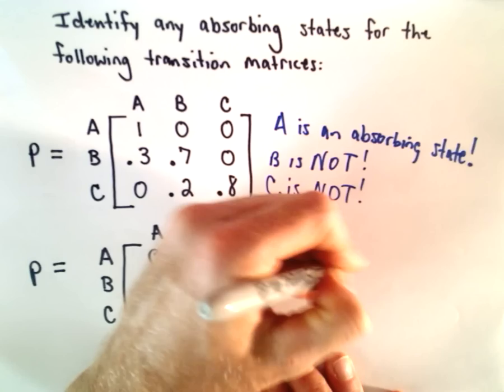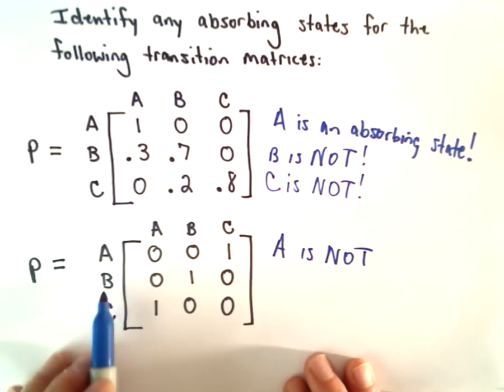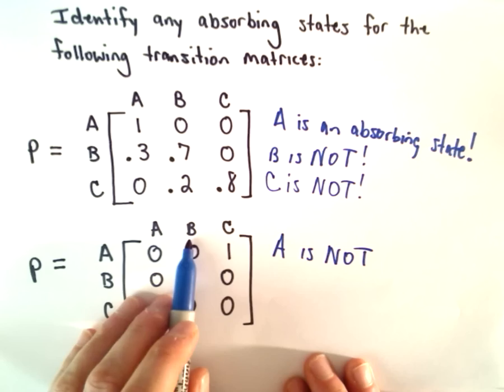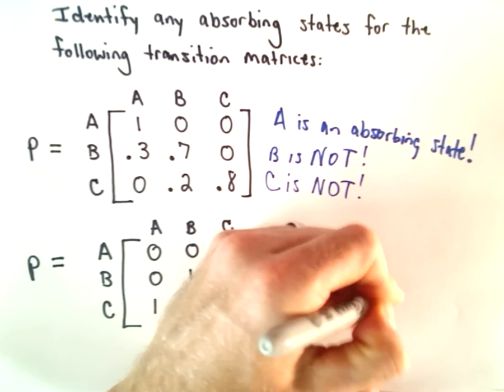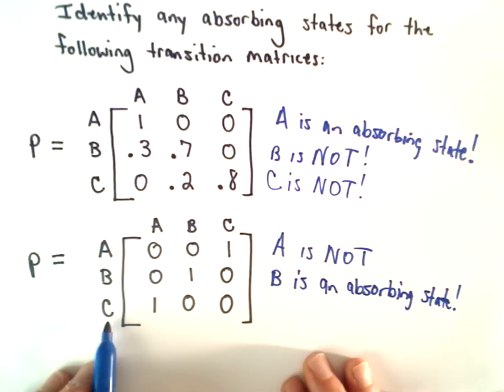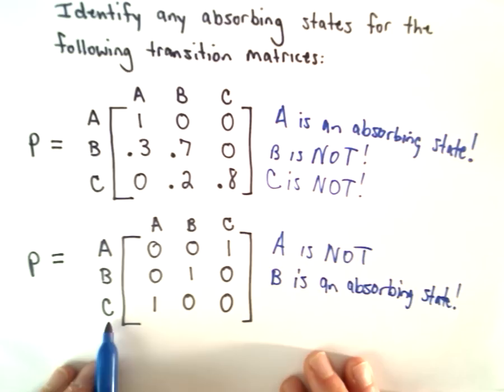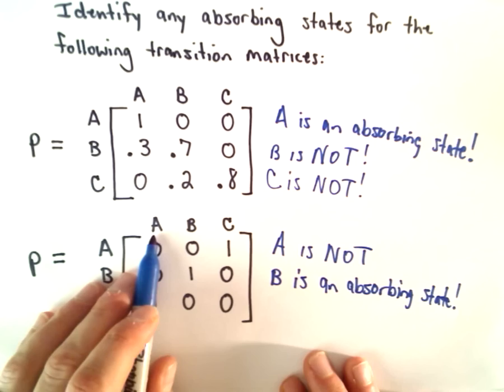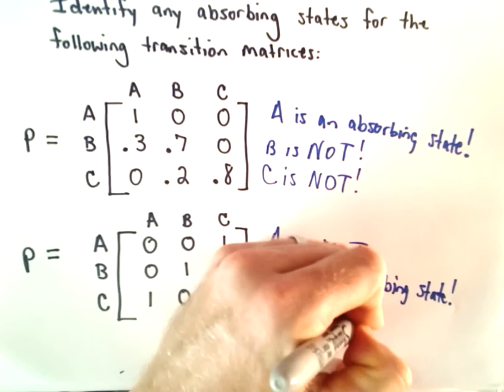If we look at state B, there's a 0% probability you'll go to A, but if you are in state B, there's a 100% probability that you'll stay in state B. Therefore, B is an absorbing state. Likewise, C is not going to be an absorbing state because if you're in C, there's a 100% probability that you're going to go to state A, so you're not staying in the same place.